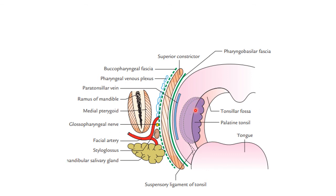The tonsil has an anterior border which is behind the palatoglossal fold and a posterior border which is anterior to the palatopharyngeal fold. It has an upper pole which extends up to the soft palate and a lower pole which is attached to the tongue by a fibrous tissue called the suspensory ligament of the tonsil.